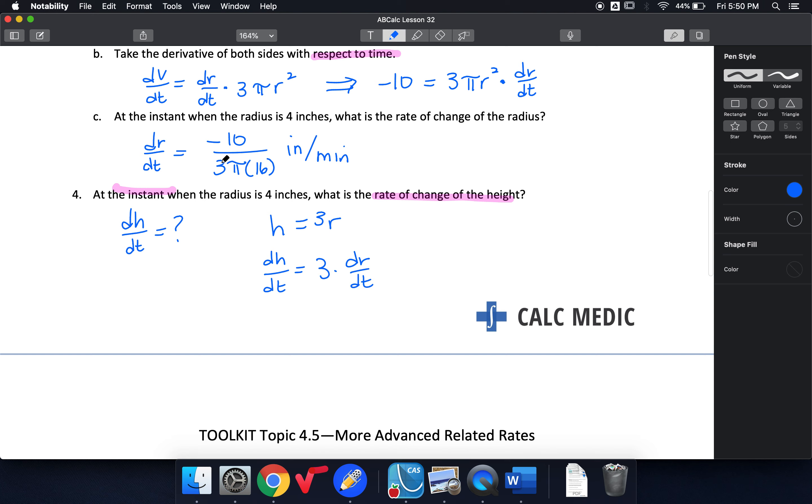At 4, I already know my dr/dt, so I can come in and plug that in. So dh/dt is going to be 3 times negative 10 over 3 pi times 16. If it was a different time, I would have had to substitute in my different radius. So this would change. So my dr/dt depends on the radius. That's what my equation for dr/dt said. So because this is 4, I'm using the same one as above. And remember, that's how your multi-step free response questions often will be.